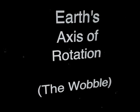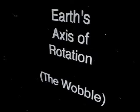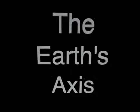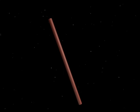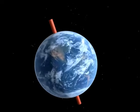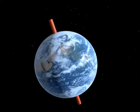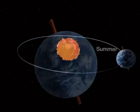Let's begin by talking about the Earth's axis of rotation, or the wobble effect. The Earth rotates on an axis that is tilted at an angle of 23.5 degrees. The Earth rotates around its axis once a day.